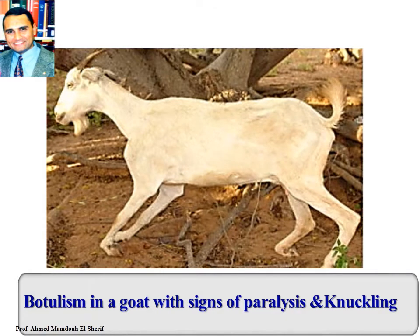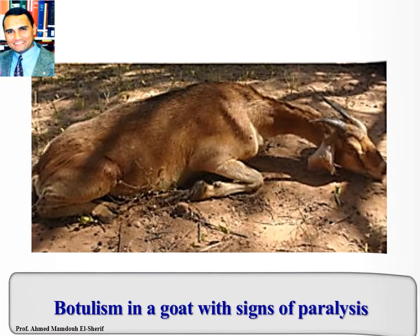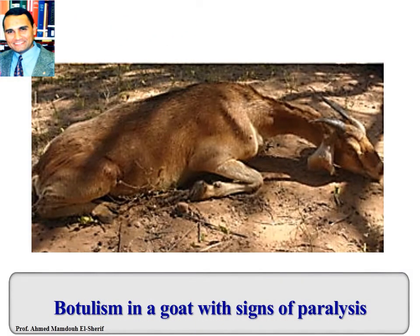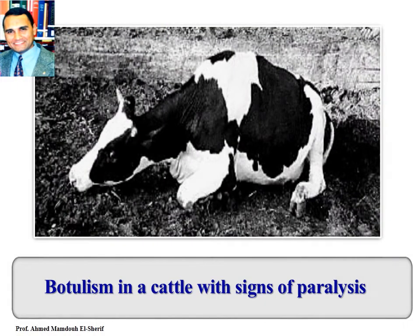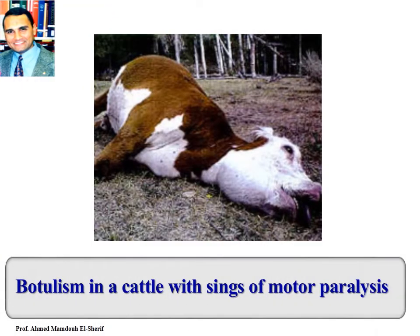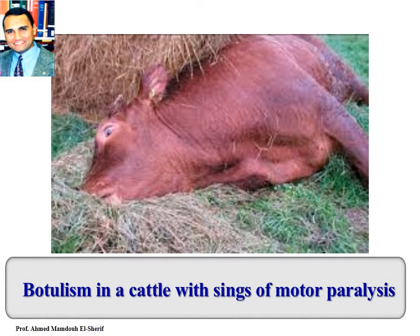A picture of botulism in a goat with signs of paralysis and knuckling. Botulism in a goat with signs of complete paralysis. Botulism in cattle with signs of paralysis and complete recumbency.